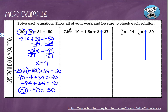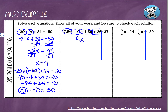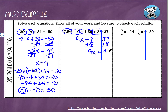Next example. I'm going to look for like terms again. I've got a 7.5x and I've got a positive 1.5x. When I add 7.5 plus 1.5, I get 9x. And then I've got more like terms — I've got a negative 10 and a positive 2. Those are both constants with no variable, so those are like terms as well. Negative 10 plus positive 2 is negative 8, and that equals 37. Two-step equation: we're going to add 8 on each side, leaving us with 9x on the left and 45 on the right. Finally, I'm going to divide each side by 9, giving me x equals 5.